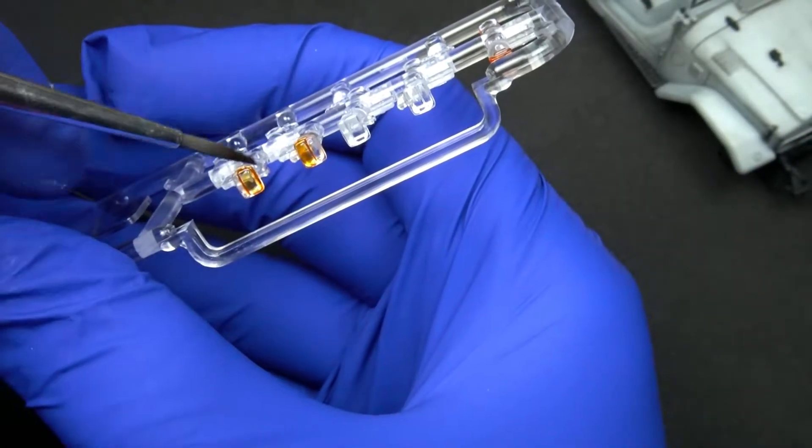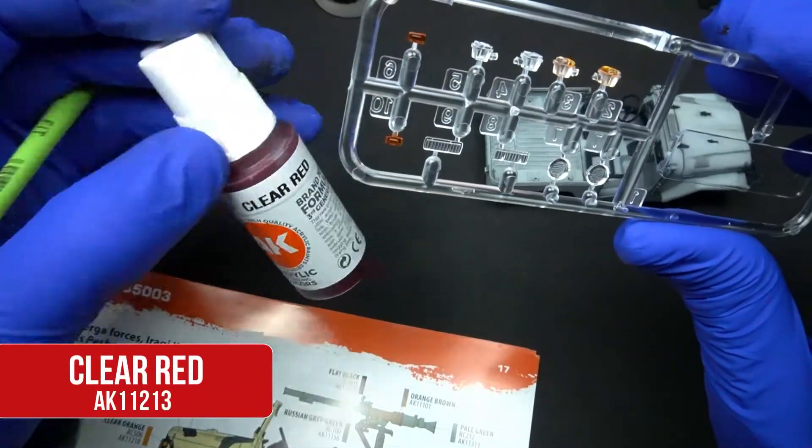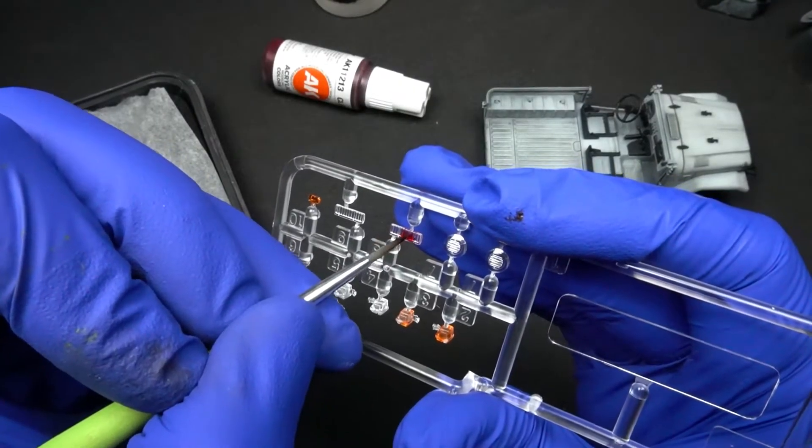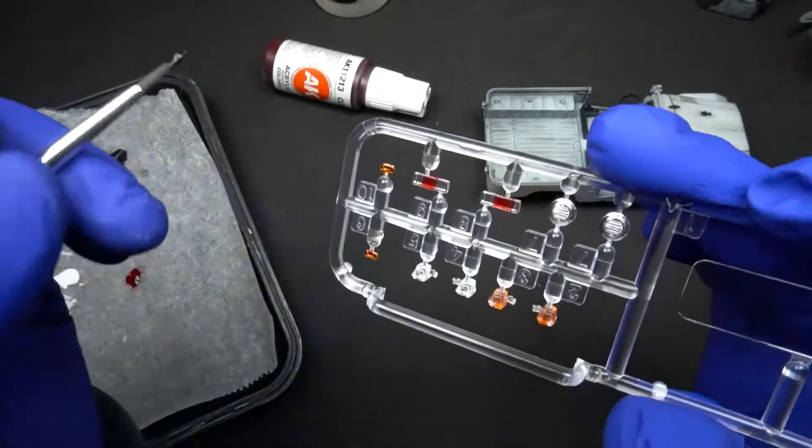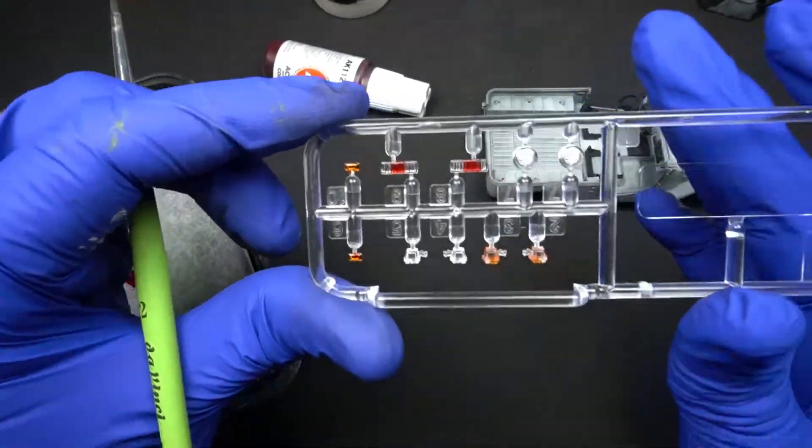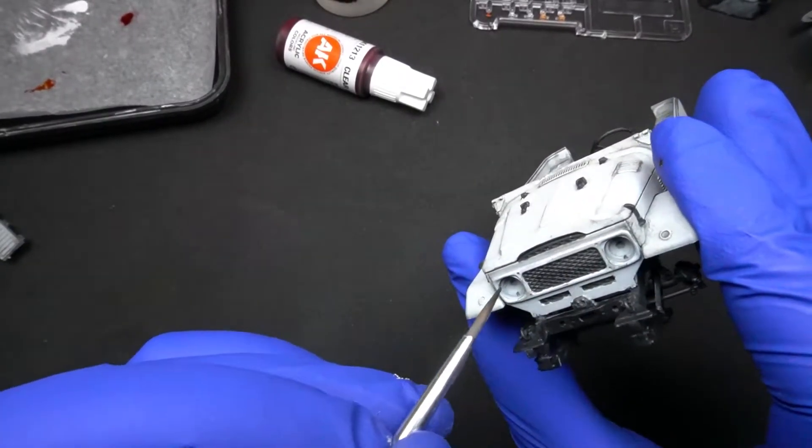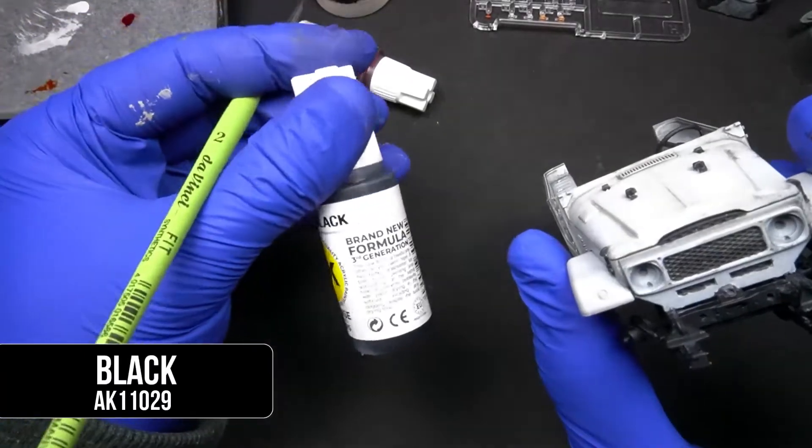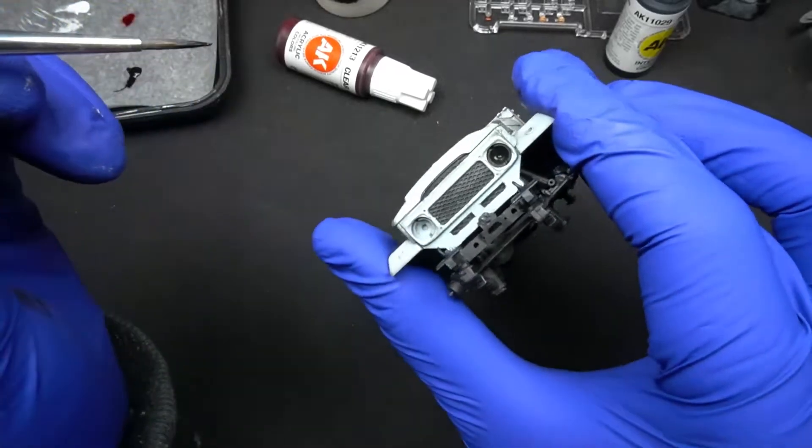If you're not sure what color you should use for these transparent parts, look up images of the real vehicle or take a look at the instruction guide, in which you'll find information and details about all the products that you'll need throughout the project. While these pieces are drying, there are some parts which we have forgotten to paint in black, so now we'll fix that before placing the headlights.